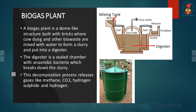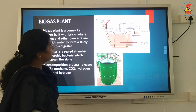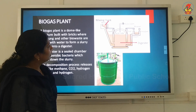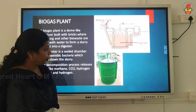A biogas plant is a dome-like structure built with bricks where cow dung and other bio-waste are mixed with water to form a slurry and put into the digester. The digester is a sealed chamber with anaerobic bacteria which breaks down the slurry. The decomposition process releases gases like methane, carbon dioxide, hydrogen, and hydrogen sulphide. The biogas plant consists of a digester, a mixing tank, and an overflow tank.